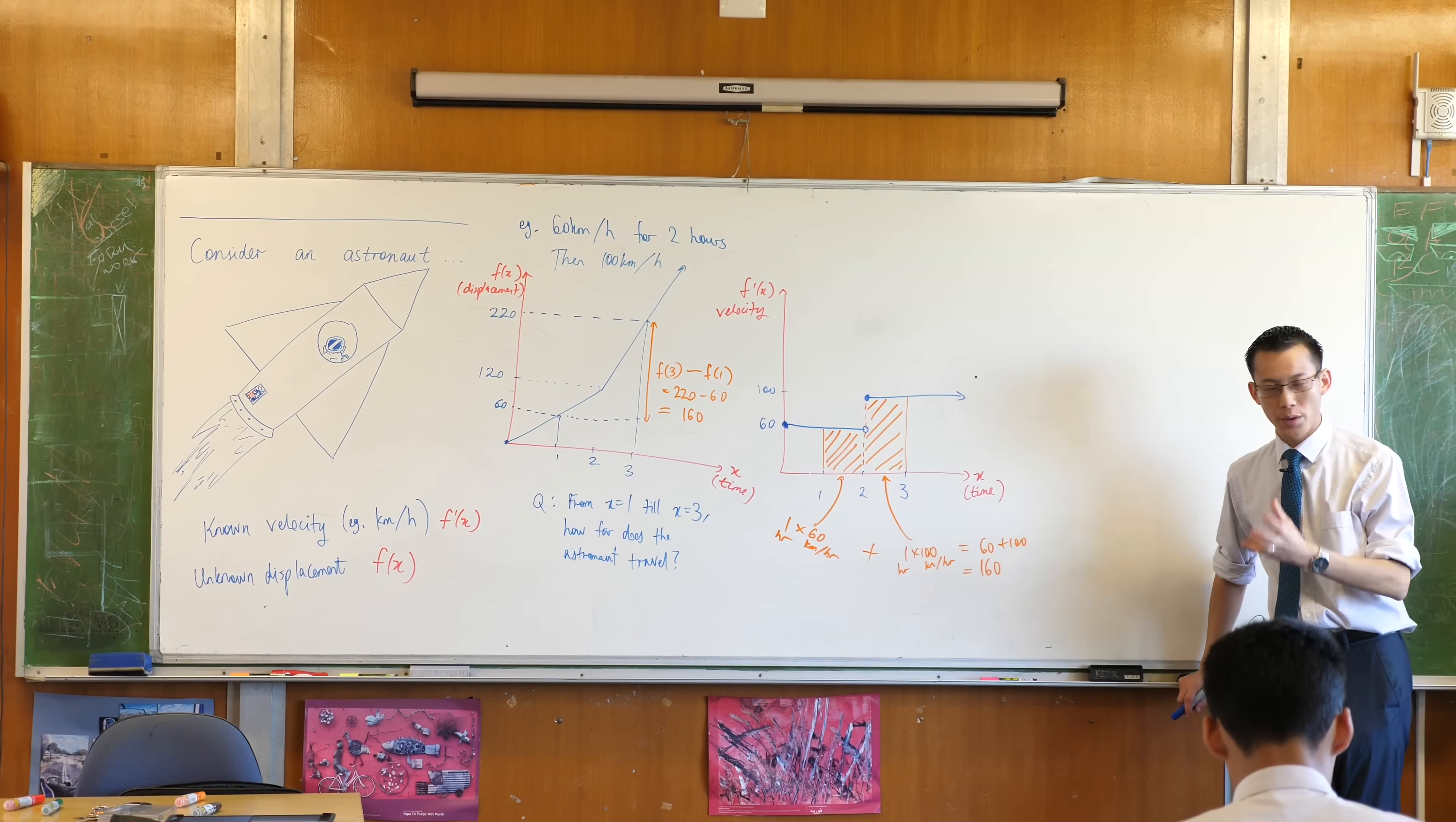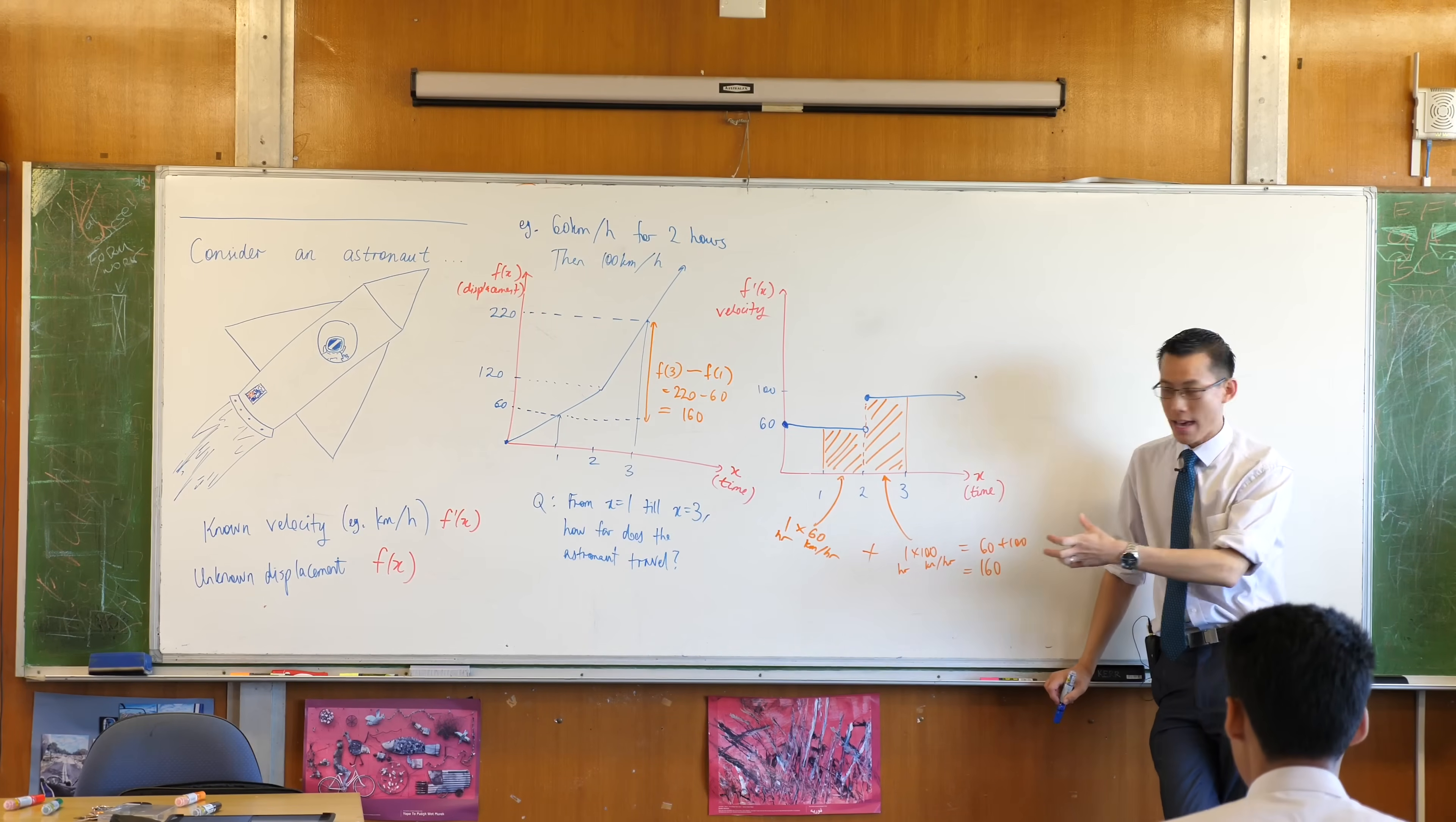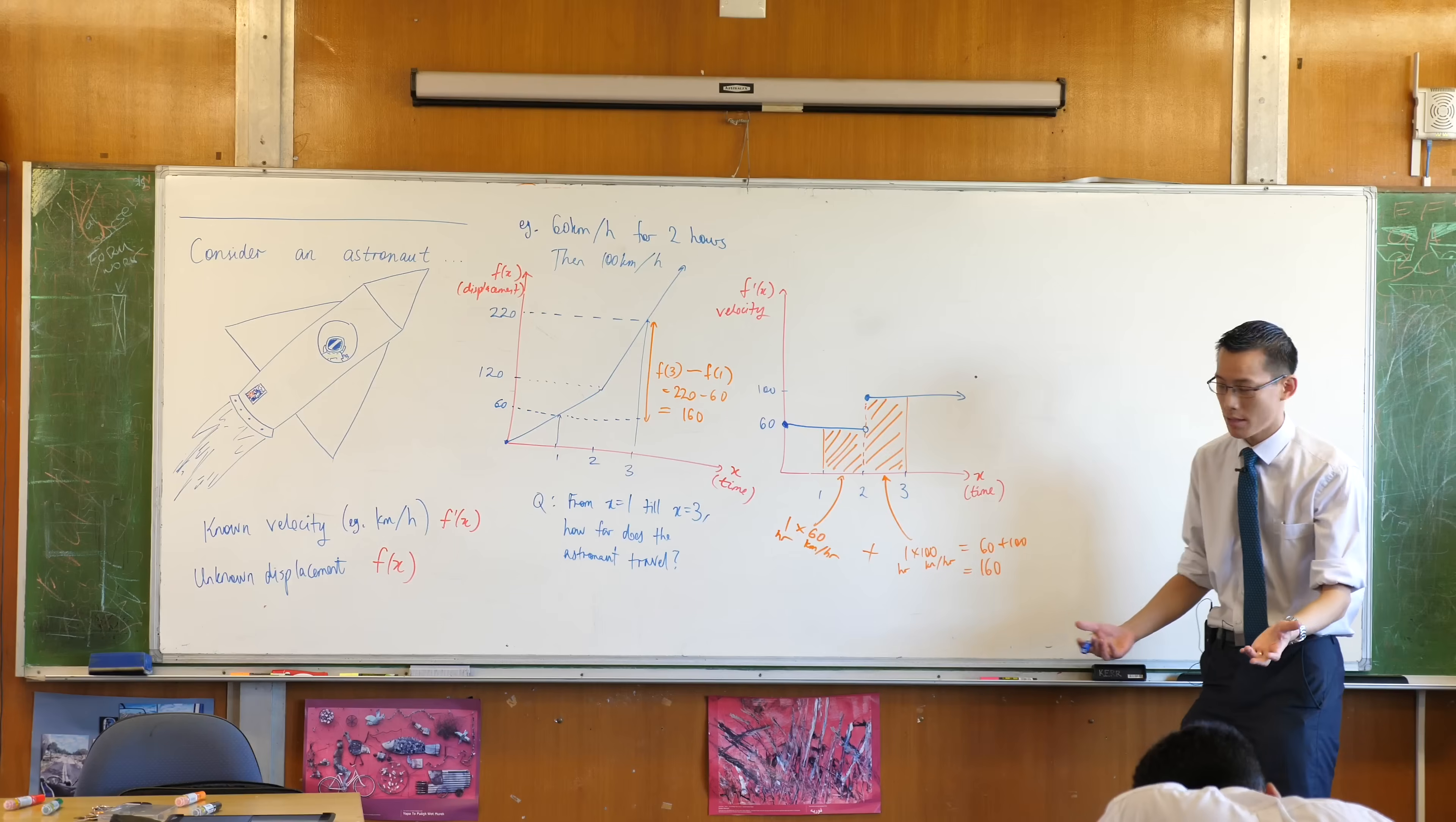So what we've done is turned a gradient problem into an area problem. You see that? That's how you work out this distance. And that's why if it was half the time, you'd make the rectangle half the size. Does that make sense?